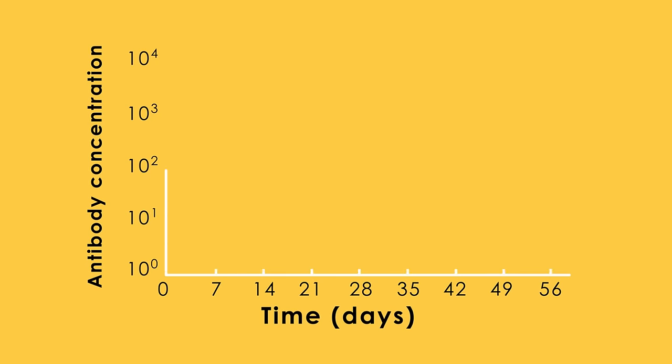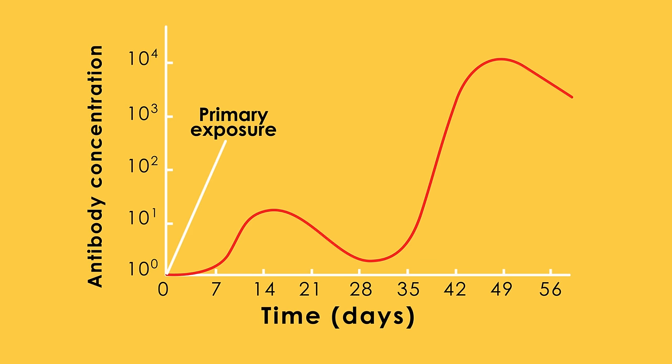The immunological memory helps the immune system respond much more rapidly and effectively than during the primary exposure. As a result, the individual is generally protected from the development of disease symptoms.